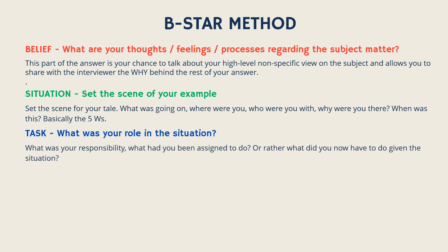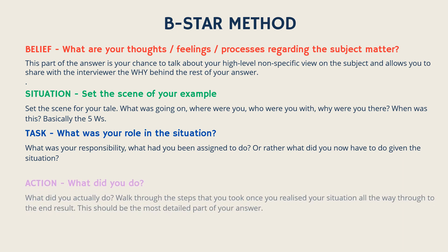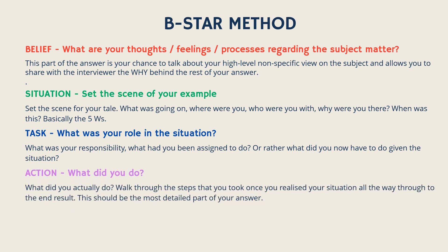Following the situation, we have T for Task. Explain your specific role and responsibilities in the situation. By doing this you highlight what you were entrusted with in your previous roles and let the interviewer understand what expectations were made of you. Up next we have the most important section, and that is A for Action. Describe the steps you took to achieve the desired outcome and explain the rationale behind your actions. This part of your answer should be the most detailed as it illustrates your problem-solving abilities, relevant skills, and adaptability in handling challenges.